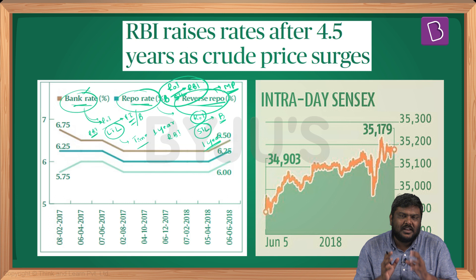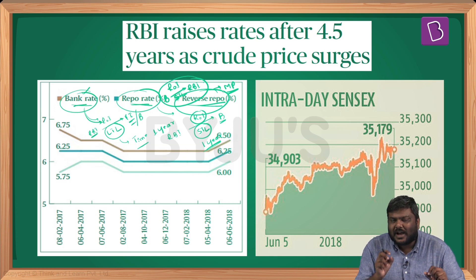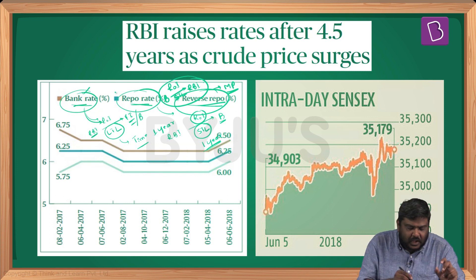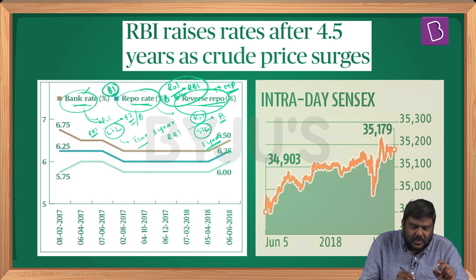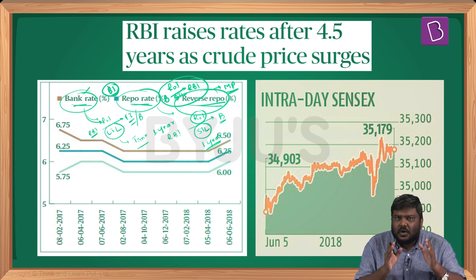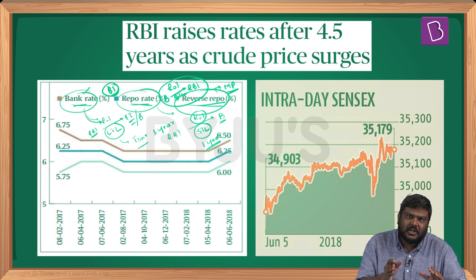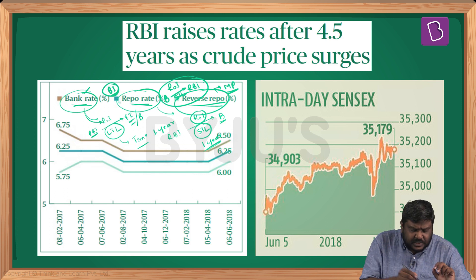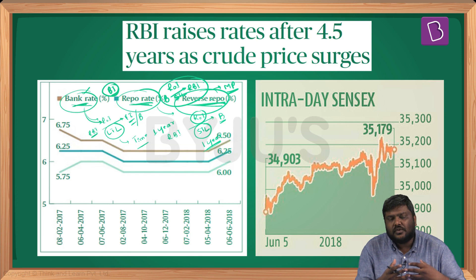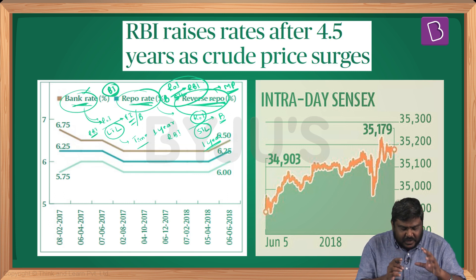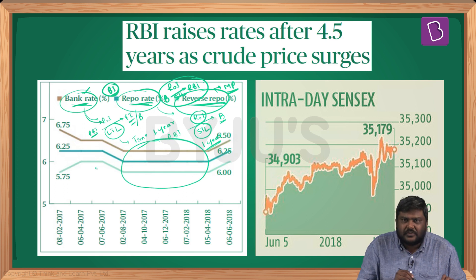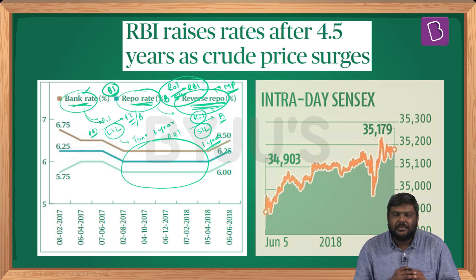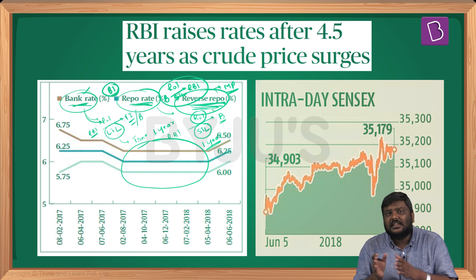Monetary policy refers to the tools used by RBI to control or regulate the flow of credit in the system. RBI follows a bimonthly monetary policy — meaning once every two months, RBI comes out with a monetary policy announcement. In these announcements, RBI uses tools such as bank rate, repo rate, reverse repo rate, SLR, and so on to regulate credit flow. The graph shows that in the last couple of years, all three rates have remained stable.